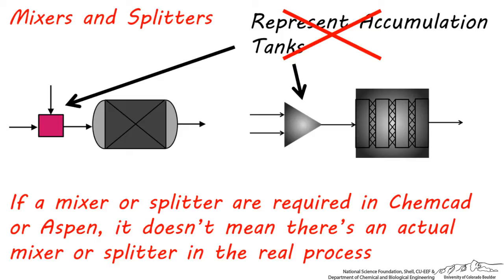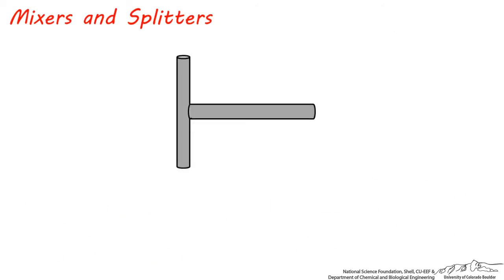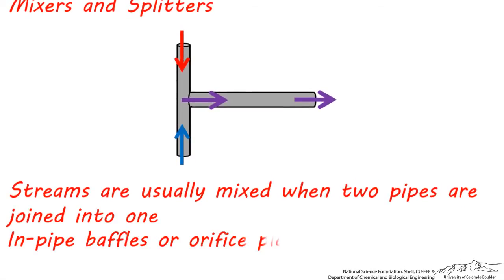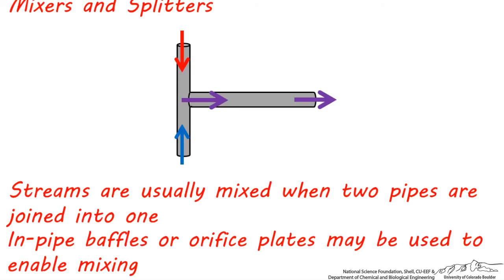Let's look at how streams are actually mixed in a real process. In order to mix two streams in an actual plant, oftentimes you'll have two pipes coming together in a T. Two streams meet at the T and leave as one combined stream.